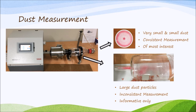You can see here the kind of result that we get — the very small dust is captured on the filter paper at the end. We get very good, consistent measurements from that type of test, and that's the one that is really of most interest. We do also look at the larger dust particles, but this measurement can tend to be inconsistent depending on the seed and its own breakage beyond the seed coat. It still gives us a good guide as to whether the polymer is working well, but the real interest is the filter paper, which gives you that fine measurement.